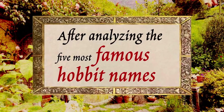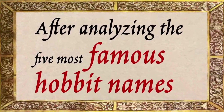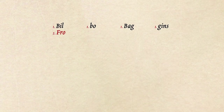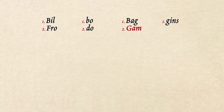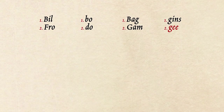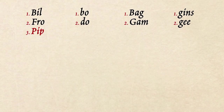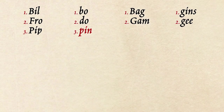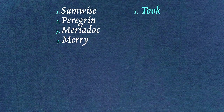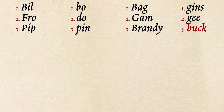After analyzing the five most famous hobbit names, I split Bill and Bo, Bag and Gins, then added Fro and Doe. I added Samwise to the irregular column and split Gam and G. I added Peregrin, Meriadoc, and Meri to the irregular column, and then split Pip and Pin. Finally, I added Took to the irregular column and split Brandybuck.